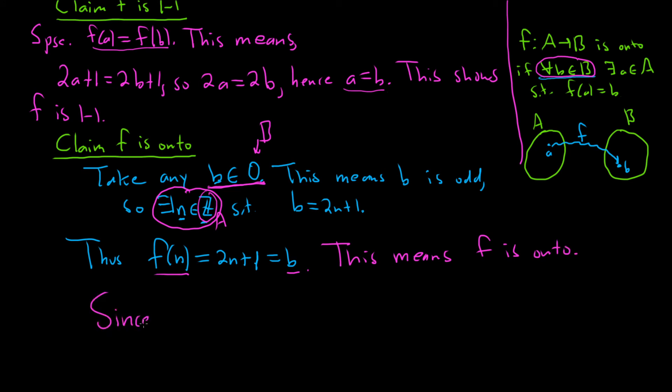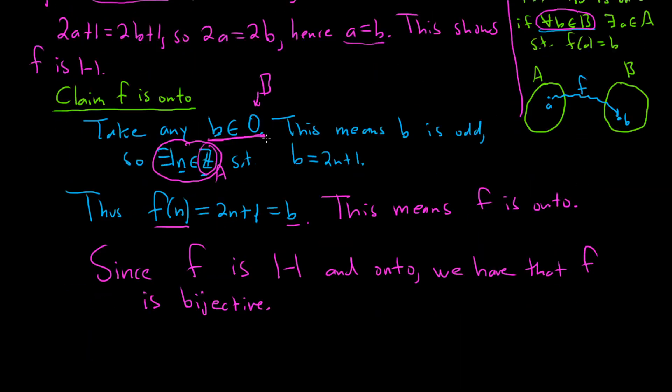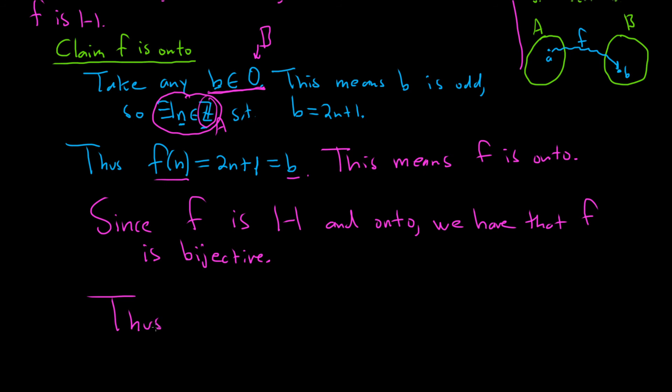So since f is 1 to 1 and onto, we have what's called a 1 to 1 correspondence between the sets. In other words, we have a bijection. Same thing. 1 to 1 correspondence means the same thing as bijection. So since f is 1 to 1 and onto, we have that f is bijective. And this means that the sets, the domain Z and the codomain O, have the same number of elements. In other words, they have the same cardinality. It's the same thing. So thus, the cardinality of Z is equal to the cardinality of O. In other words, they're said to be numerically equivalent.